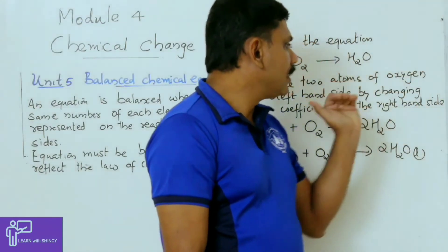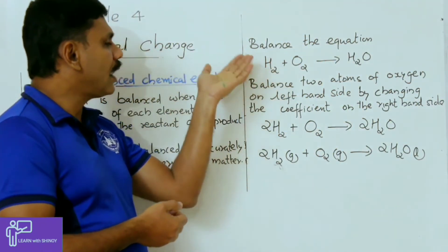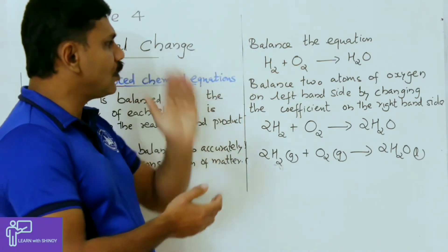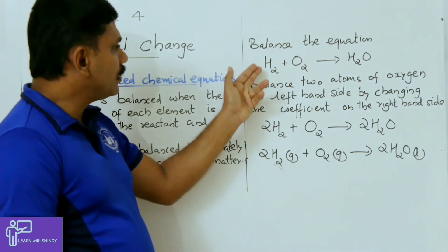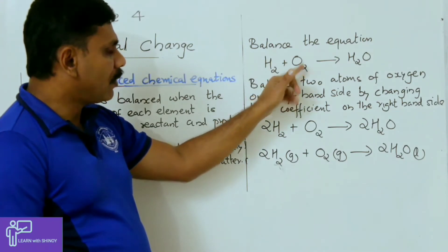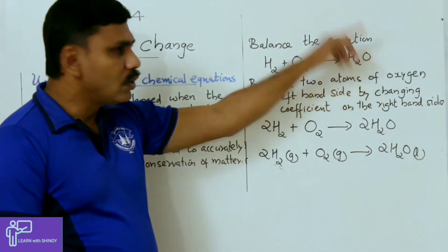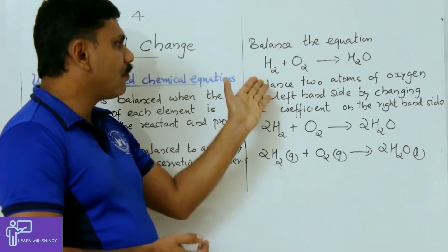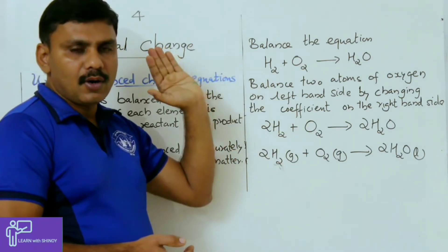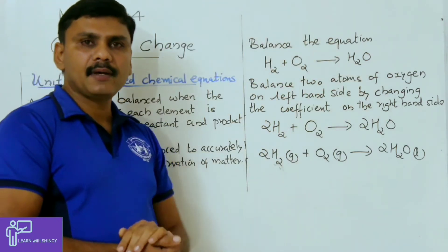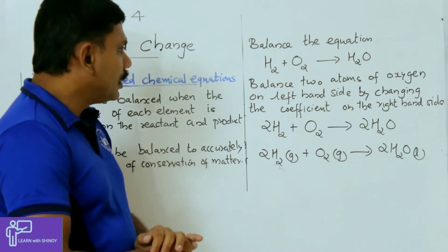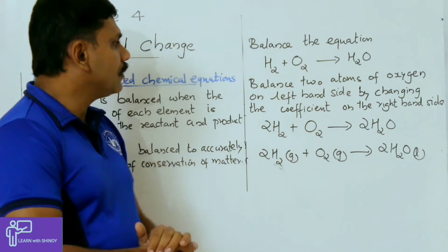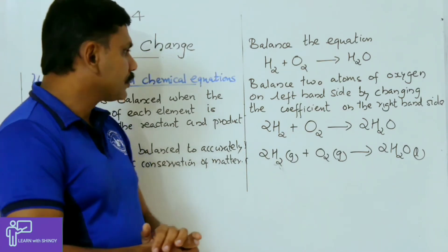Here we are balancing a simple equation: H₂ + O₂ giving H₂O. This equation is not balanced because on the left side there are two hydrogen and two oxygen, while on the right side there are two hydrogen and only one oxygen. When we balance the equation, the number of hydrogen atoms on the left side must equal the number on the right side, and the same applies to oxygen atoms.